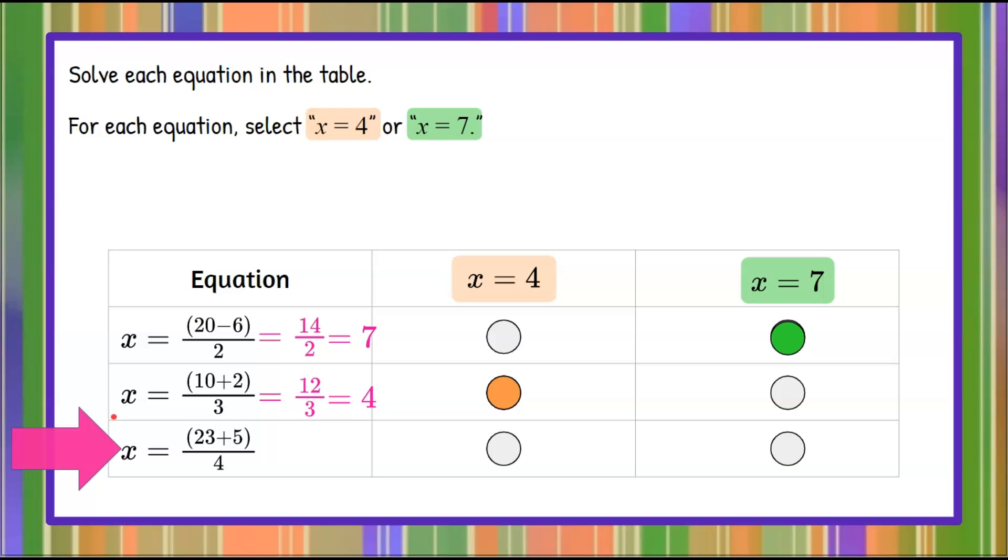In our third and final equation, we have a quantity in the numerator of the sum of 23 and 5, all divided by 4. 23 plus 5 is 28, all divided by 4, and 28 divided by 4 is 7, and that is our selection, x equals 7.